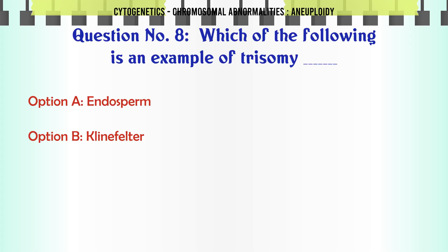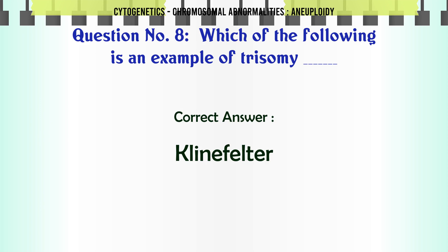Which of the following is an example of trisomy? a. Endosperm, b. Klinefelter, c. Turner, d. Xeroderma. The correct answer is Klinefelter.